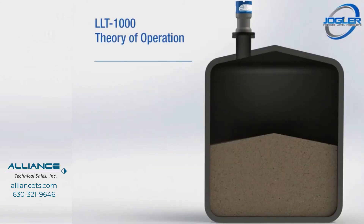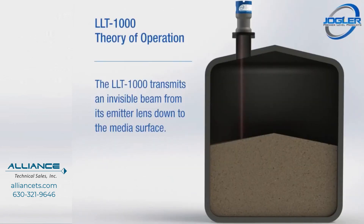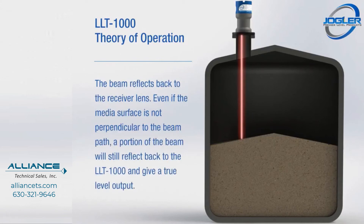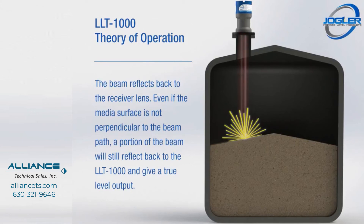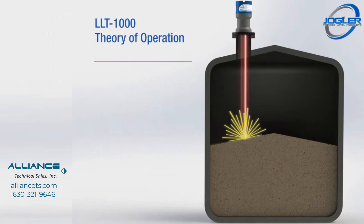The LLT-1000 transmits an invisible beam from its emitter lens down to the media surface. The beam reflects back to the receiver lens. Even if the media surface is not perpendicular to the beam path, a portion of the beam will still reflect back to the LLT-1000 and give a true level output.